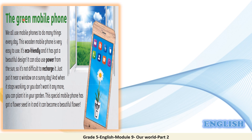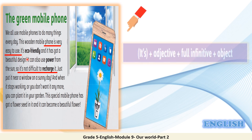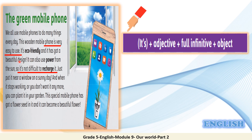Now let's look at the green mobile phone. Are you ready to underline any examples of adjectives followed by full infinitives? Here we go. 'Mobile phone is very easy to use.' Also we have: 'It's not difficult to recharge it.' Can you tell me what you notice about the adjectives 'easy' and 'difficult'? Well, they're followed by 'to' and the base form of the verb — that is called a full infinitive.